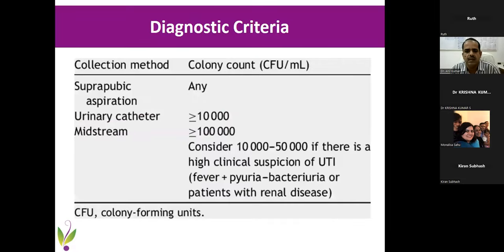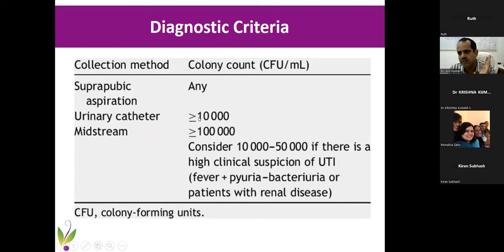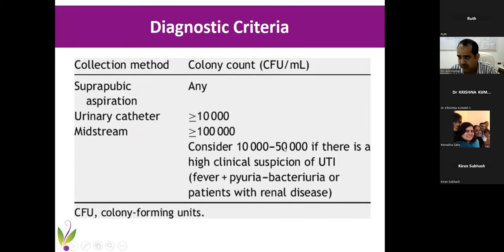Let's discuss urine cultures. The diagnostic criteria depend on the site. For suprapubic aspirate, any number of colonies is significant. For urinary catheter, more than 10^4 is significant. For classical midstream urine, the cutoff is 10^5. But if you specify the patient is symptomatic with acute urinary symptoms and pyuria, 10,000 to 50,000 colonies are also significant and need to be treated. Just by telling us the sampling site and the patient's symptoms, we can determine whether the colony count is significant.